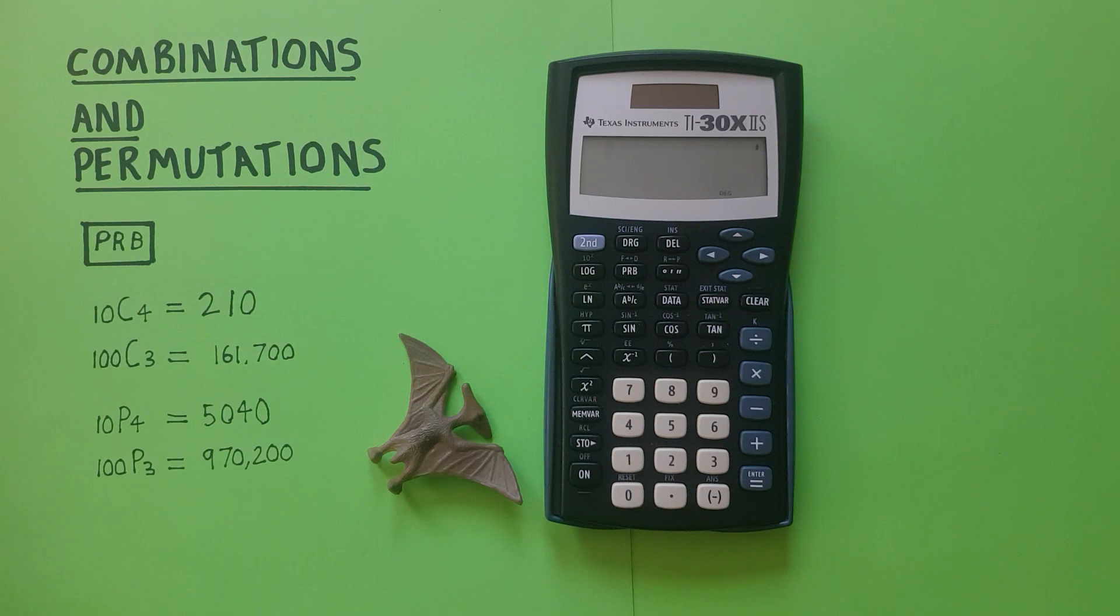And for permutations it's done much the same way. A permutation is choosing a number of objects from a set when the order does matter.